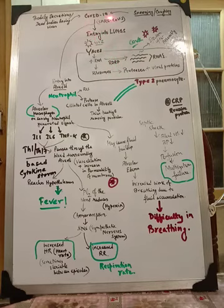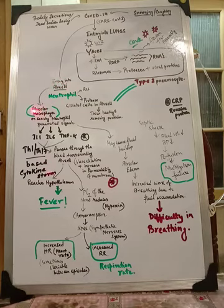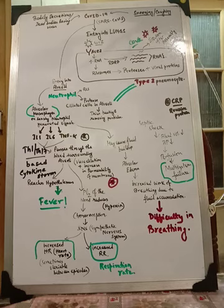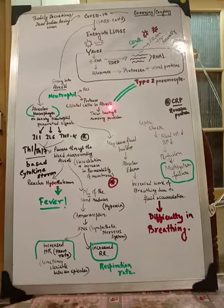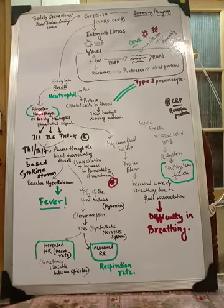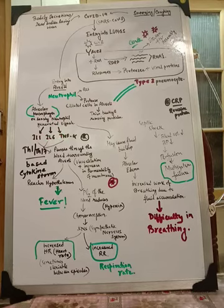Moving to the next part: COVID-19 enters the alveoli. When it enters, alveolar macrophages are present along with neutrophils — alveolar neutrophils are also present there, entering from the blood vessels surrounding the alveoli. This can produce reactive oxygen species (ROS) and proteases. There are ciliated cells — type 2 pneumocytes — in the alveoli. As they are cleaved by proteases, signals are sent to the alveolar macrophages.